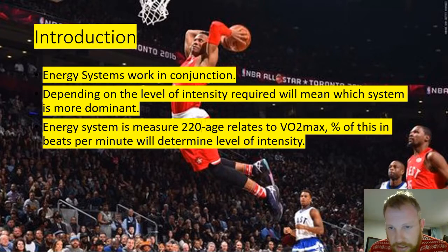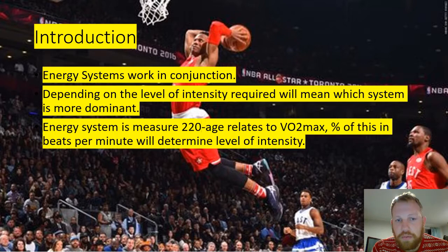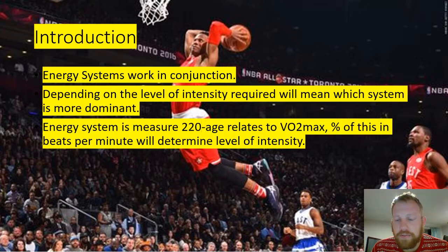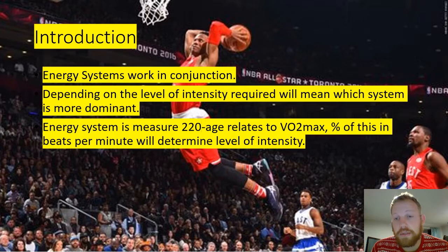Intensity is measured by 220 minus your age, which relates to your VO2 max. The percentage of this, measured in beats per minute, will determine the level of intensity. So if we're working at 65 to 85%, we're using the aerobic system as the most dominant system — that could be 140 to 190 beats per minute, for example.